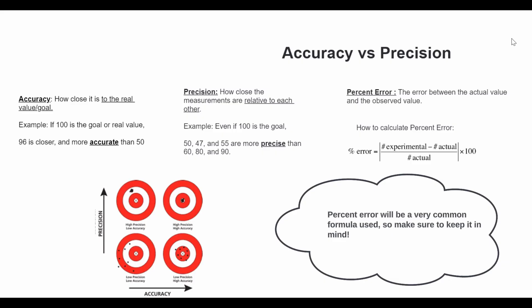So if we reference the target graphs that Manil was talking about earlier, we can see that the top two target graphs have higher precisions than the bottom two. And this is because, again, the dots are closer to each other, even though they might be farther away from the goal, which is the center.